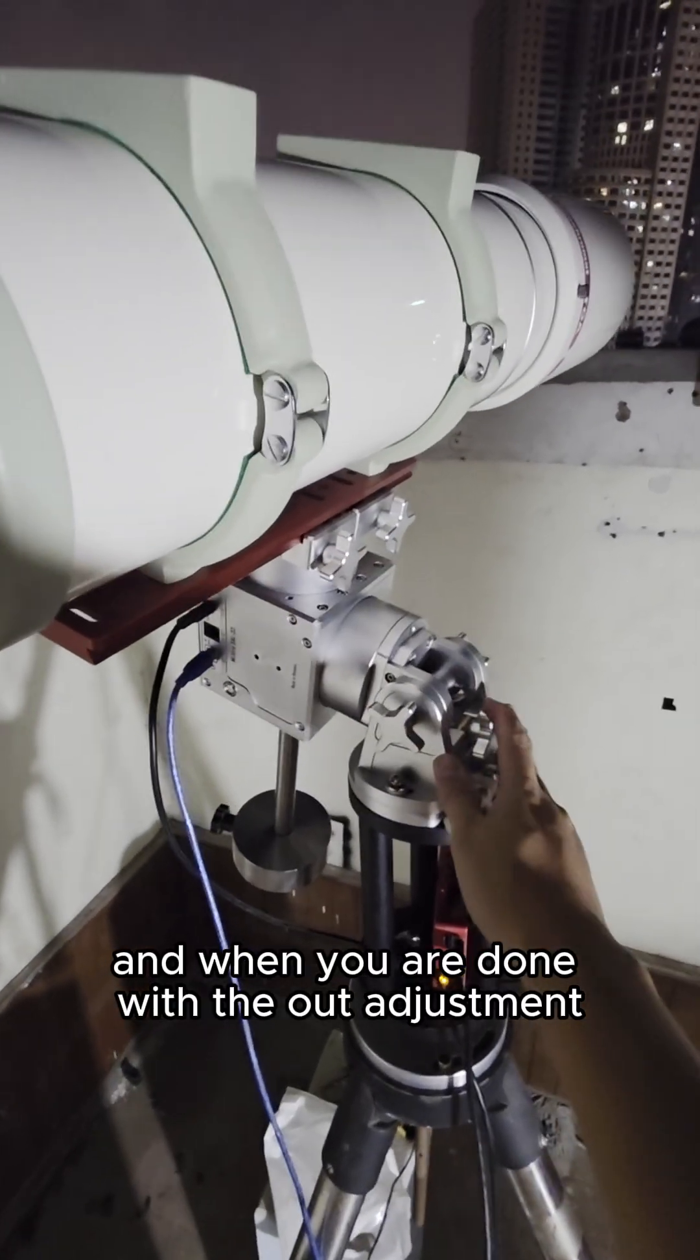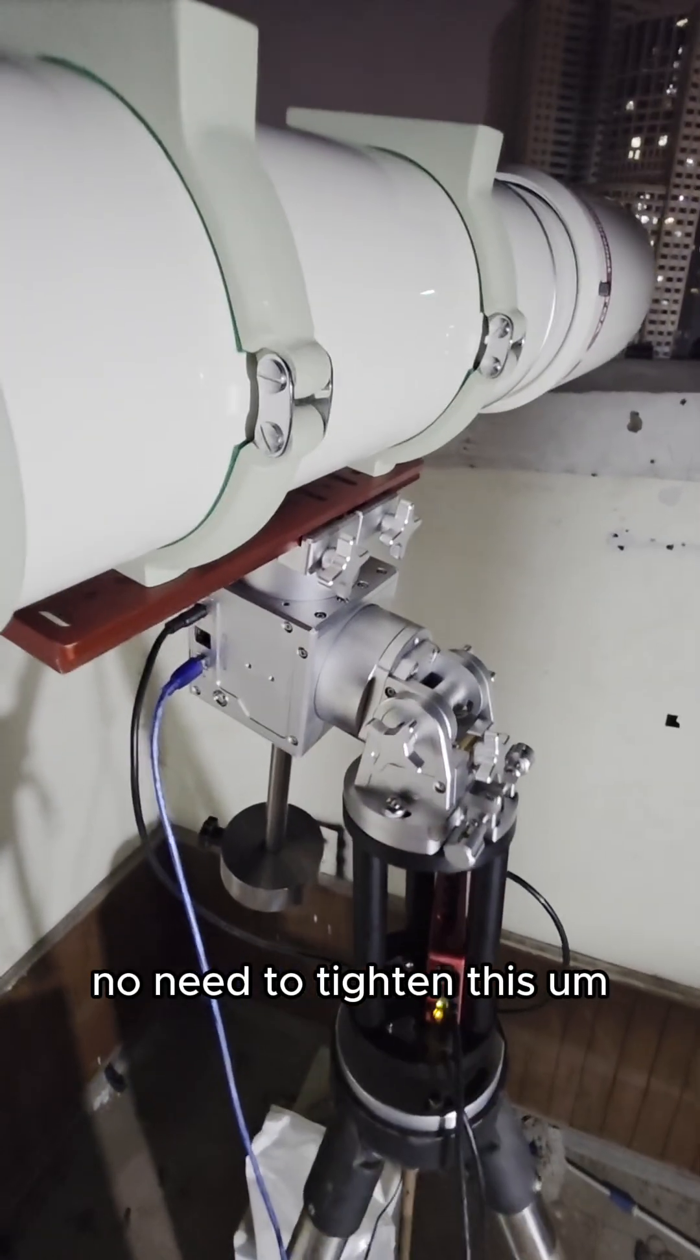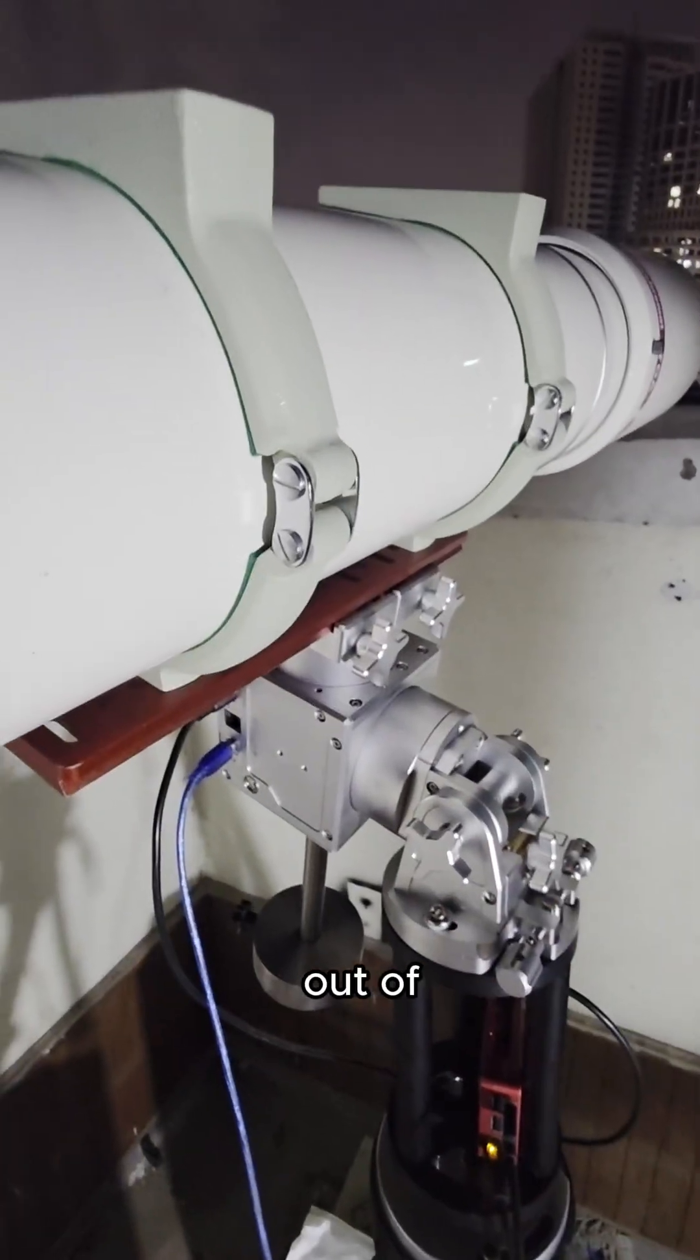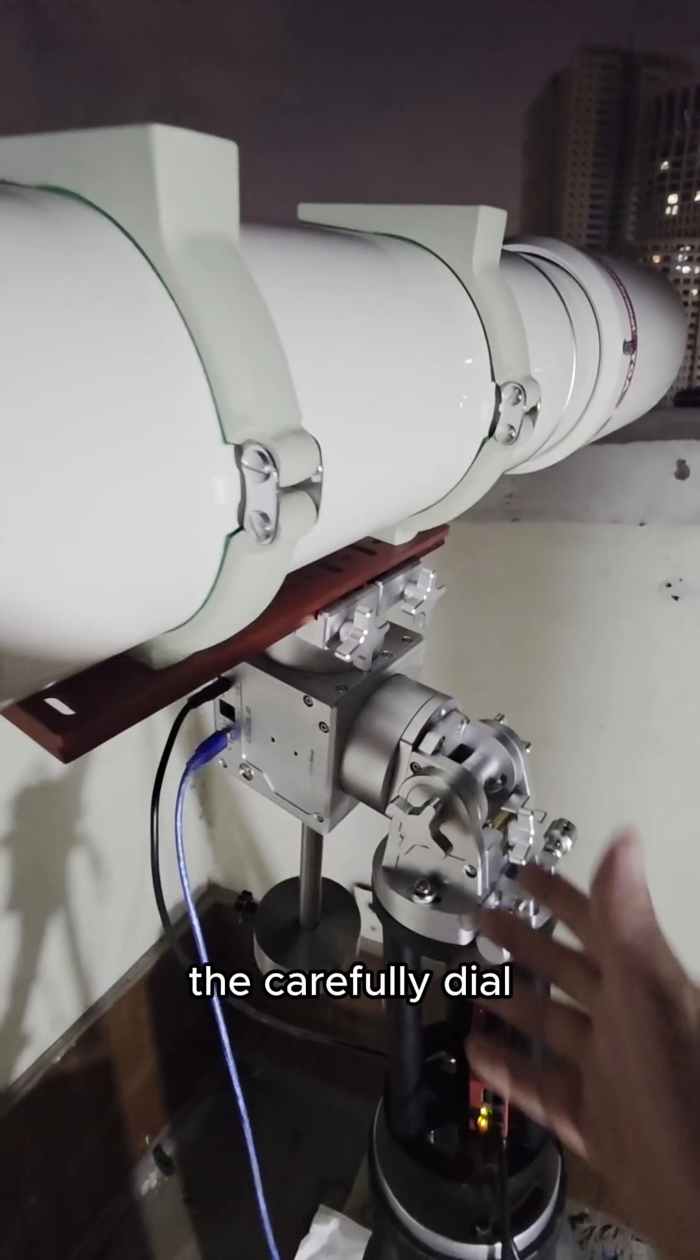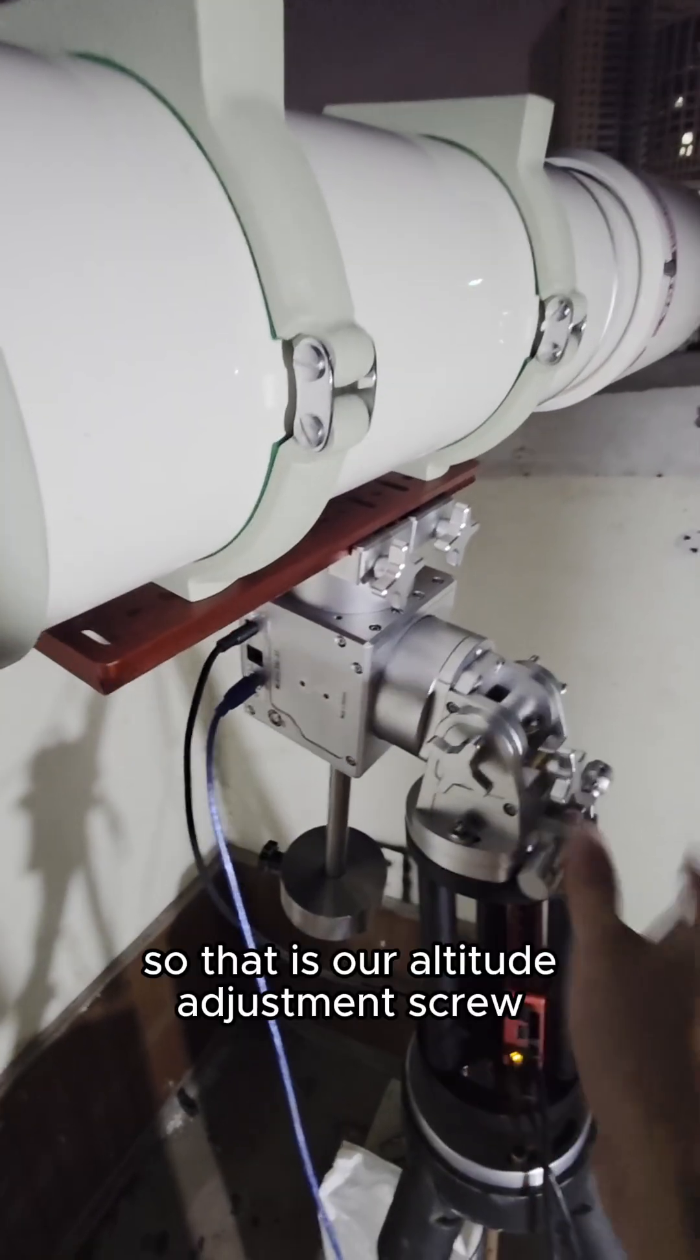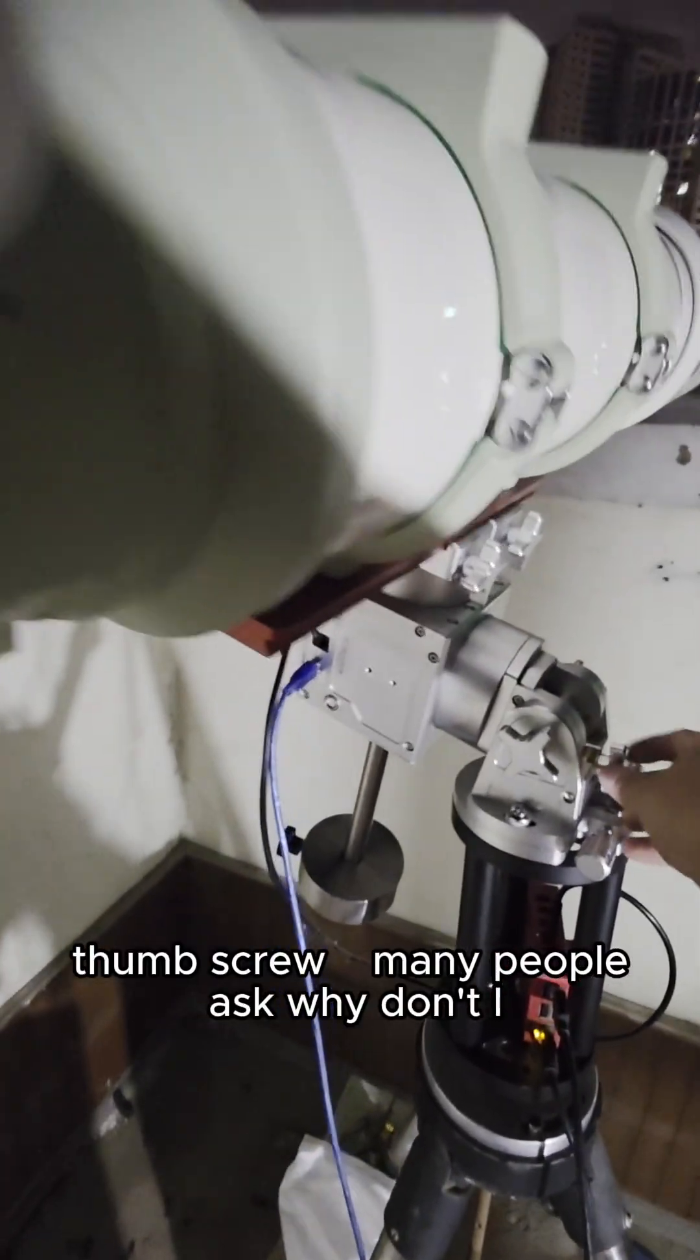And when you are done with the altitude adjustment, you just leave it like that. No need to tighten this knob and throw your polar alignment out of the carefully dialed in polar alignment that you had earlier. So that is the altitude adjustment screw, thumb screw.